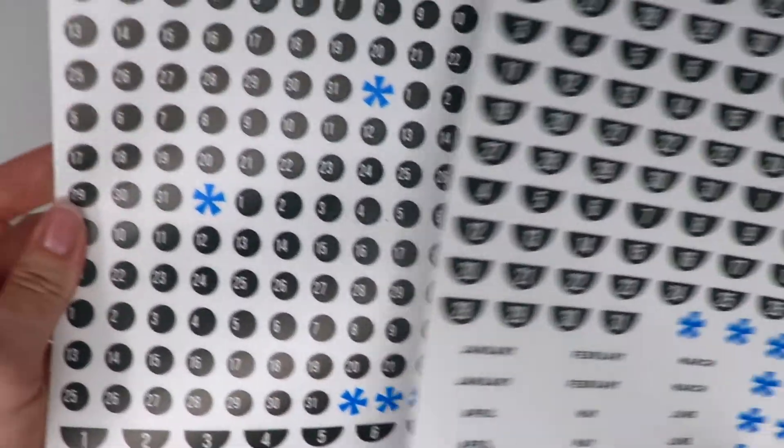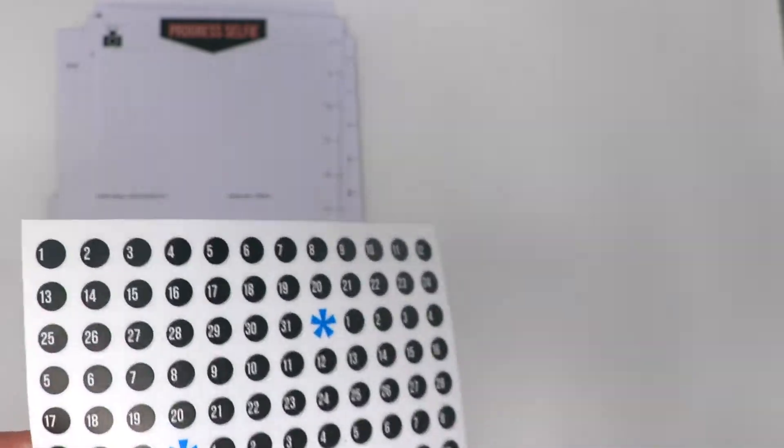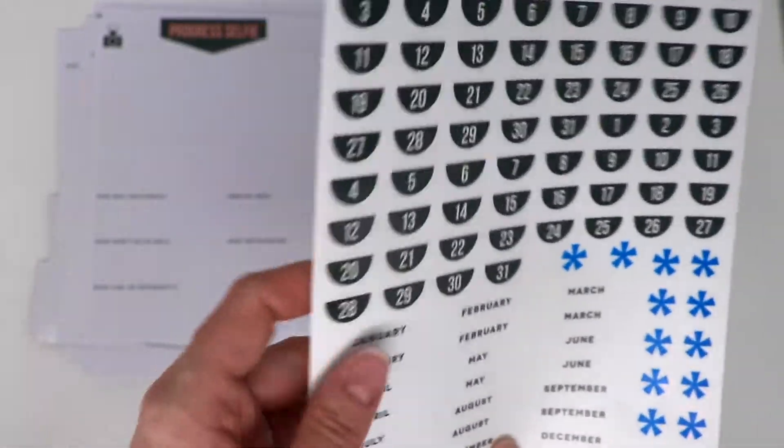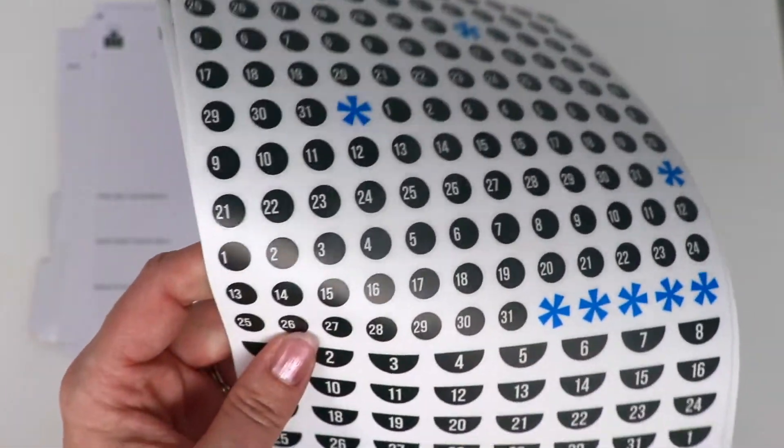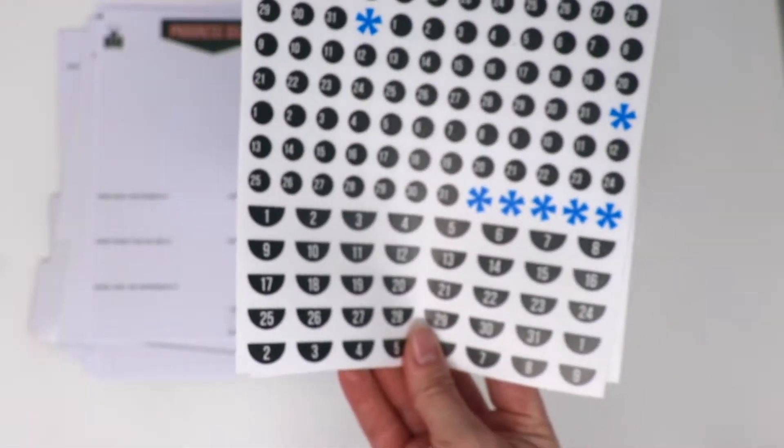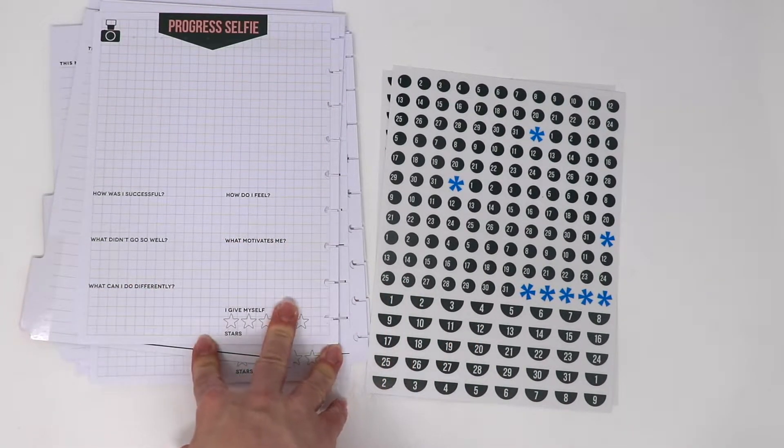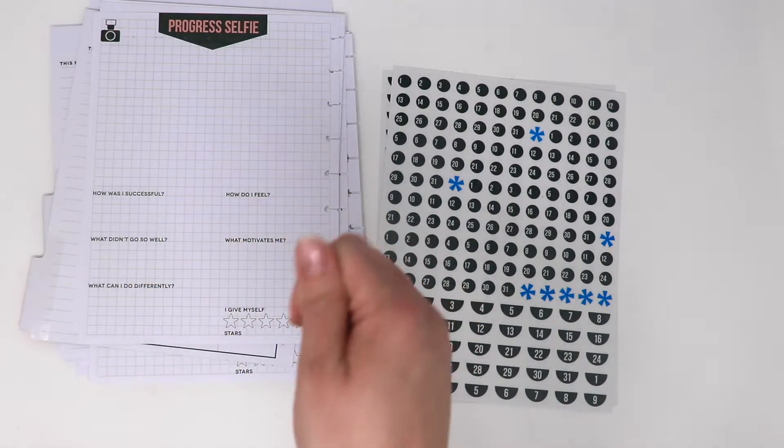And that's it, you guys. So this planner does not come with too many motivational stickers or fun stickers. This is basically just so you can date it. They do have other packs of stickers that are specifically for working out, and they have little weights that you can put on there every time you work out - just really fun stuff.